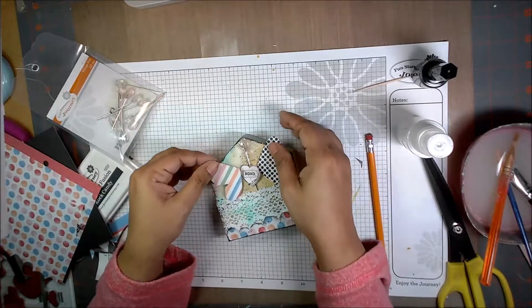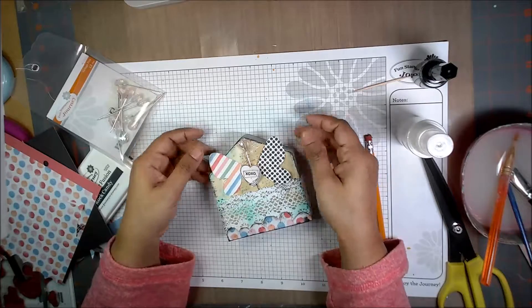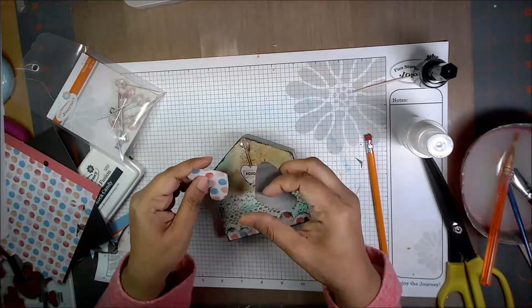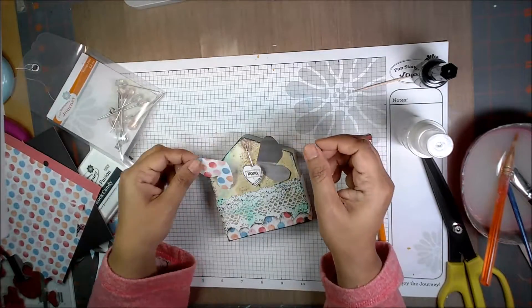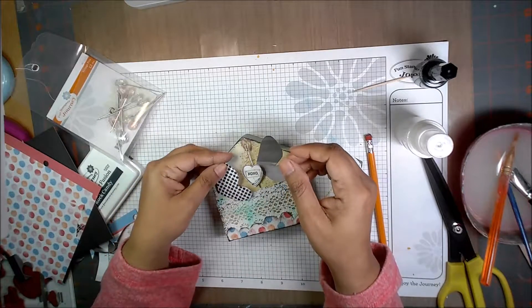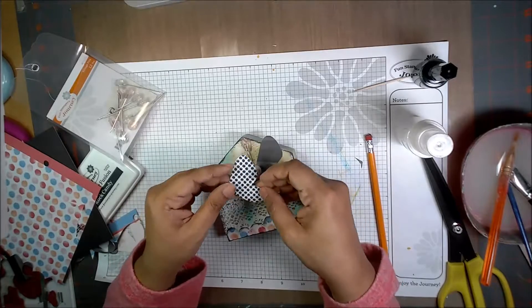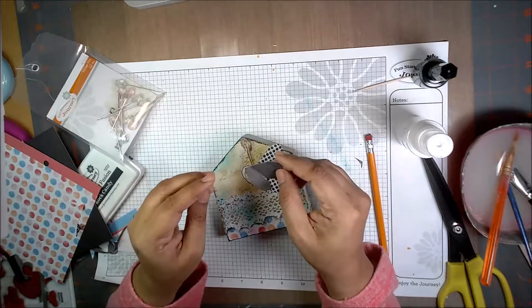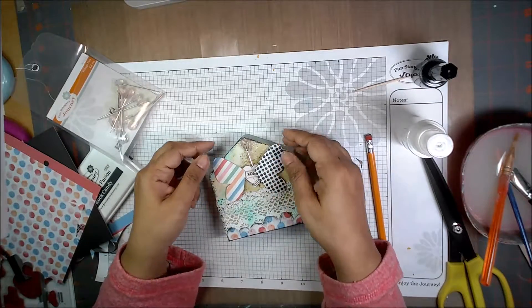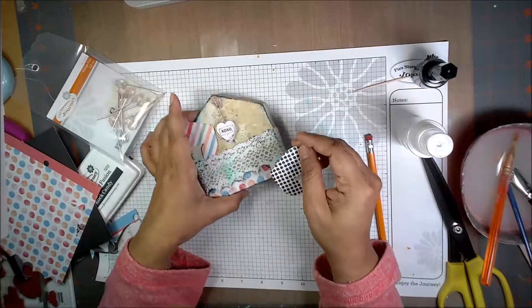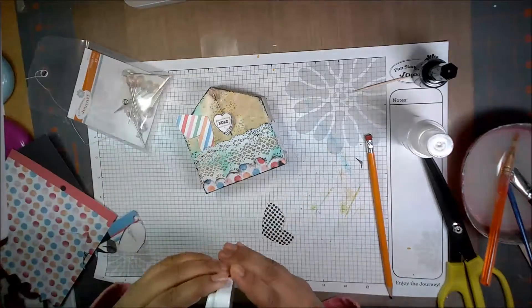You could do it like this or we could do it like this. I think it might be better to do this. Yeah, again I'm gonna ink the edges.